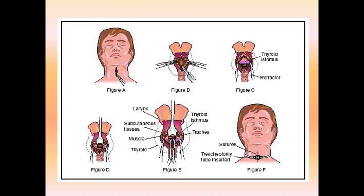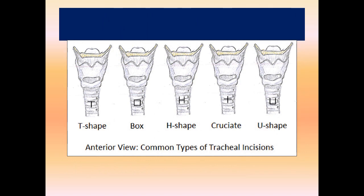The procedure involves making a slit in the skin, cutting the subcutaneous tissue, then retracting the neck strap muscles. When the thyroid isthmus is visible, it is dissected or pushed upward; any encountered blood vessels are ligated. An incision is made onto the tracheal wall, the tube is inserted, sutures are placed, and a neck tie is secured.